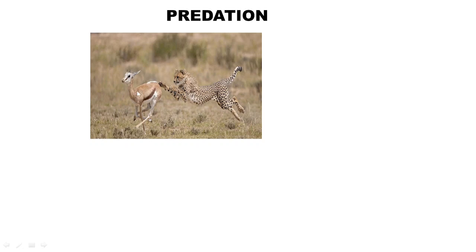Predation is also nature's way of transferring energy to higher trophic levels. Producers convert energy from sunlight, which is transferred to deer, then to carnivores — it is a means of the food chain to transfer energy from one level to another. In the absence of predators, prey would achieve a higher population, causing instability in the ecosystem.